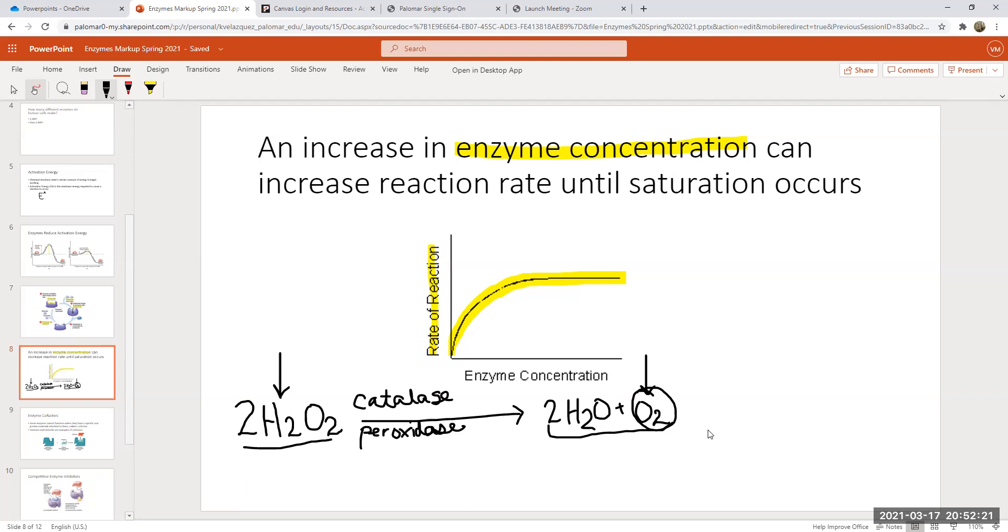This is just one of thousands of examples we could give for an enzyme causing a reaction to take place. And this is just really pointing out a couple of ways that you know it's taking place: looking at the disappearance of a reactant or the appearance of a product, or you can look at the rate at which it's happening.